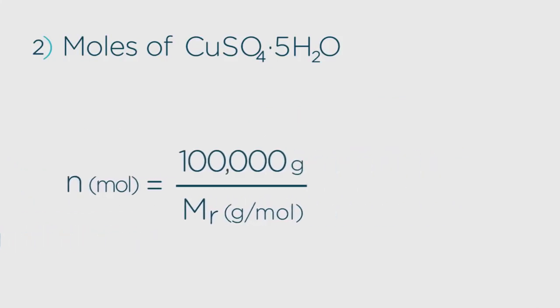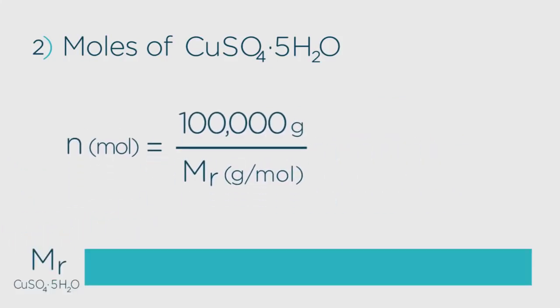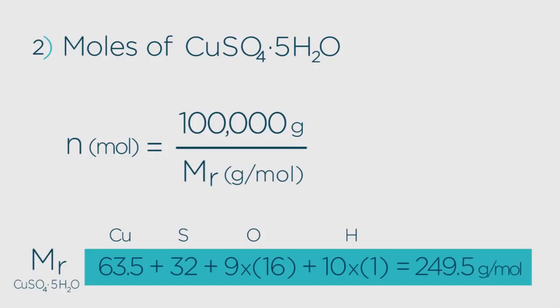Using your periodic table, you can work out that this is 63.5 for the copper atom, plus 32 for the sulfur, 9 times 16 for the oxygens, and 10 times 1 for the hydrogens, altogether making 249.5 grams per mole.